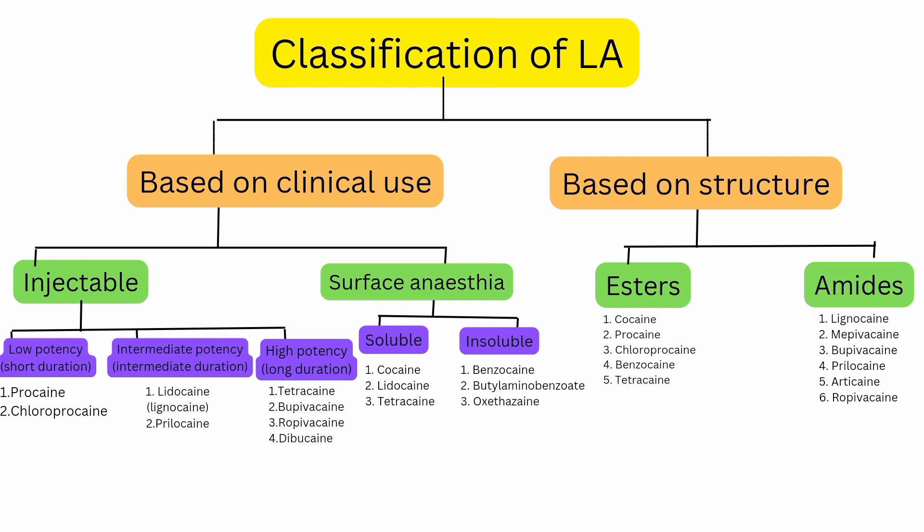Injectable local anesthesia is divided based on its potency — it can be low potency, intermediate potency, or high potency. The lower the potency, the shorter the duration of action, and similarly for high potency the duration of action is longer. Starting with low potency and short duration, we have two medicines: Procaine and Chloroprocaine.